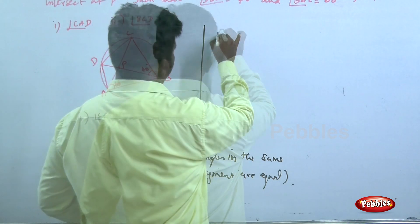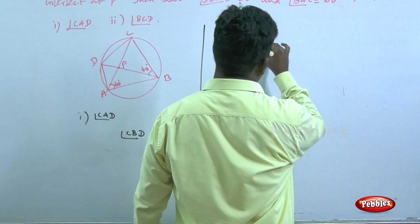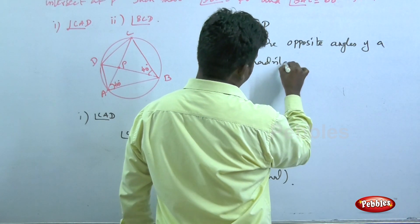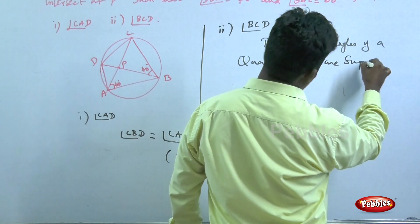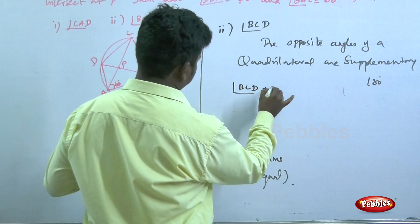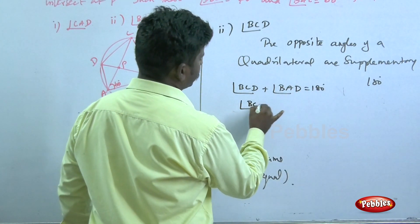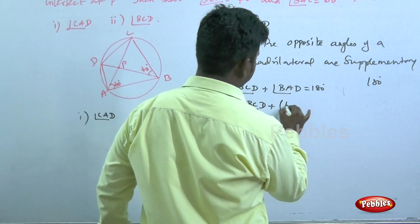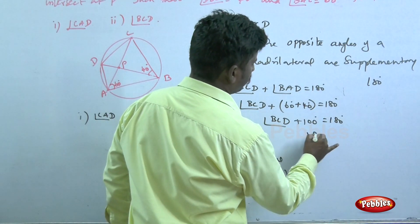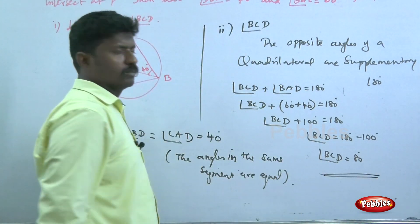For the second part, find angle BCD. Using the property that opposite angles of a cyclic quadrilateral are supplementary: angle BCD plus angle BAD equals 180 degrees. Angle BAD equals angle BAC plus angle CAD equals 60 plus 40 equals 100 degrees. So angle BCD plus 100 degrees equals 180 degrees, giving angle BCD equals 80 degrees.